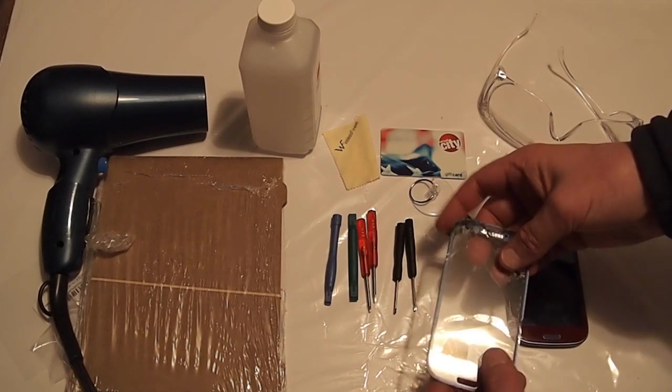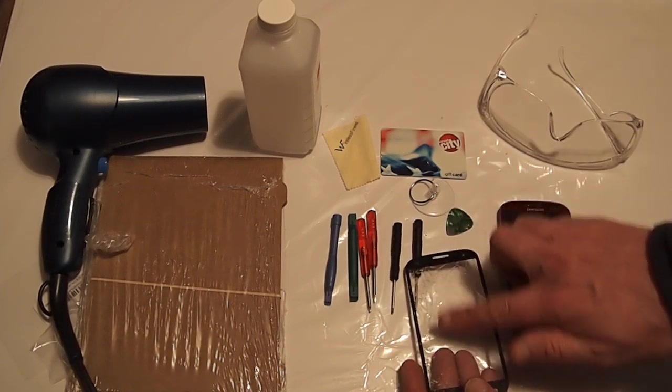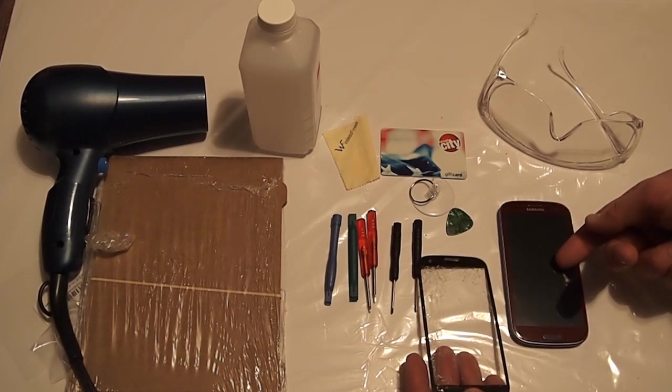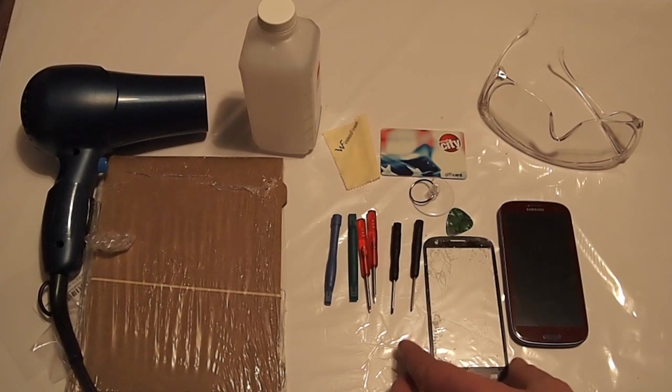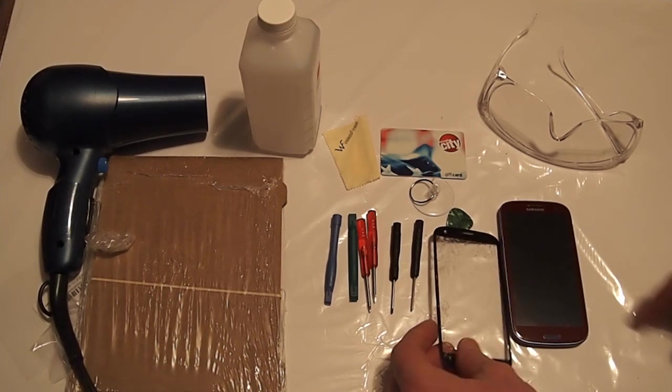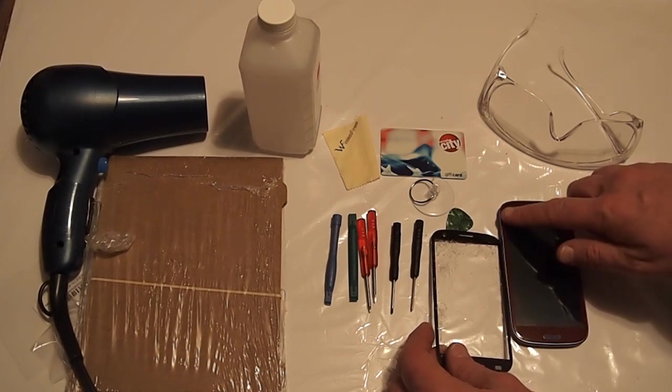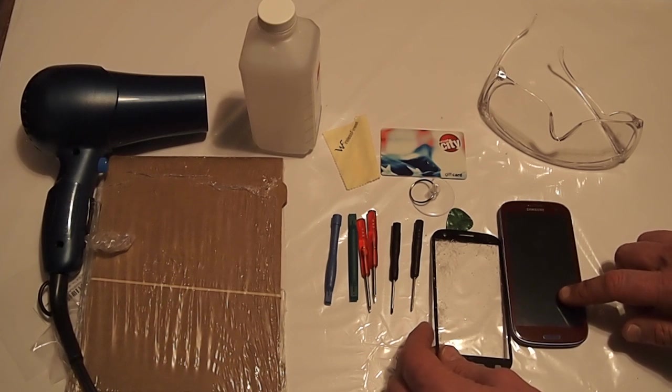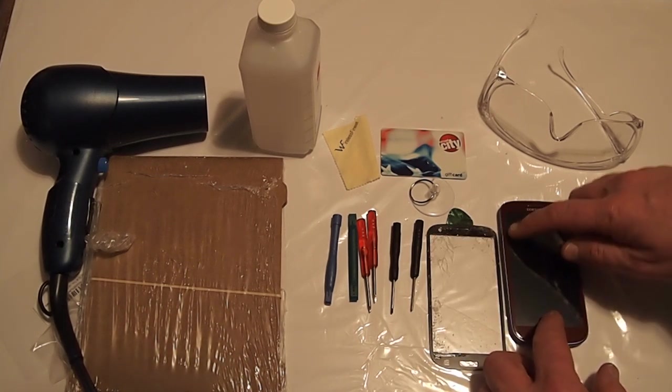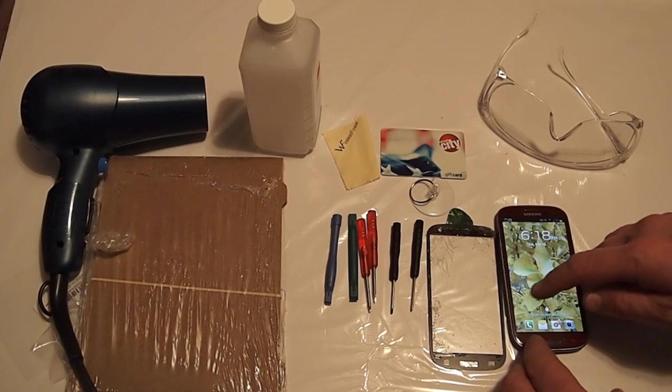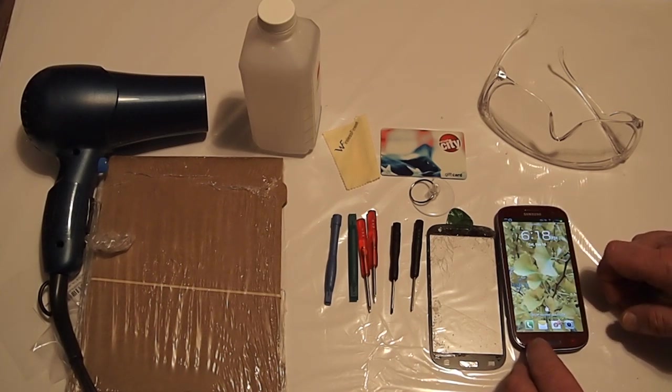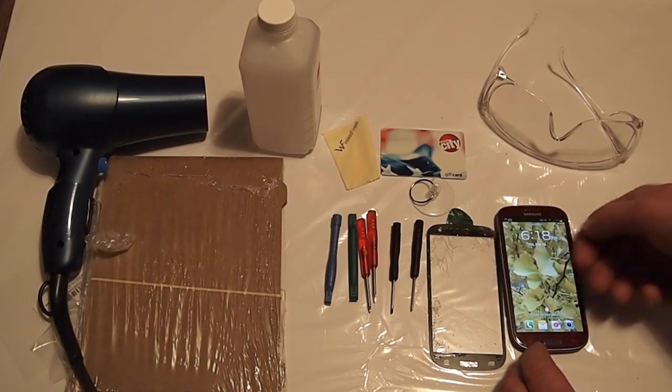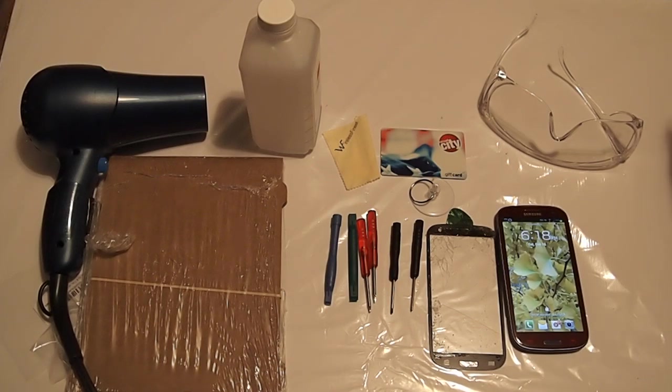One thing I noticed was on the original screen there's an adhesive that attaches it to the digitizer which is underneath. I was able to get that off, but when I put the new screen on there's no adhesive holding it onto the digitizer that's below here. So there is a little bit of an air gap between the underside of the glass and the display.